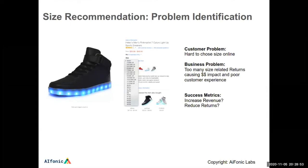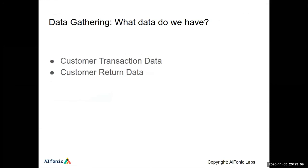The solution is to automatically recommend the right size of a particular product to a particular customer. The success metrics could be increase in revenue or reduction in returns. The data available includes customer transaction data — what sizes have you purchased before — and customer return data. When you return a shoe, you indicate whether it was large or small. If you bought Nike size 8 and returned it saying it was small, we know your foot is probably bigger than Nike size 8, so we can extract information from return data.